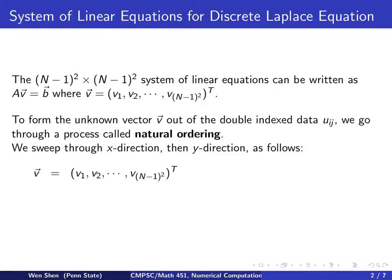We go through two levels of sweeping. First, we go through the x-direction and then the y-direction as follows. The V vector, which contains (N-1)² unknowns, is the following.